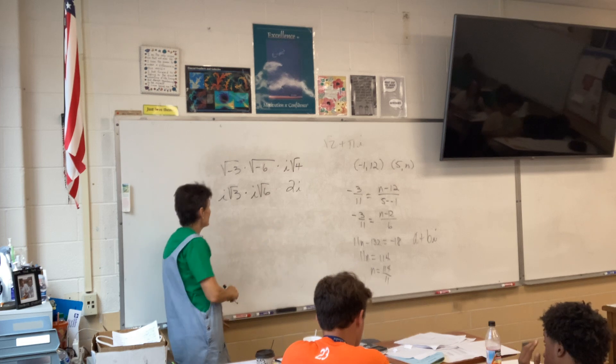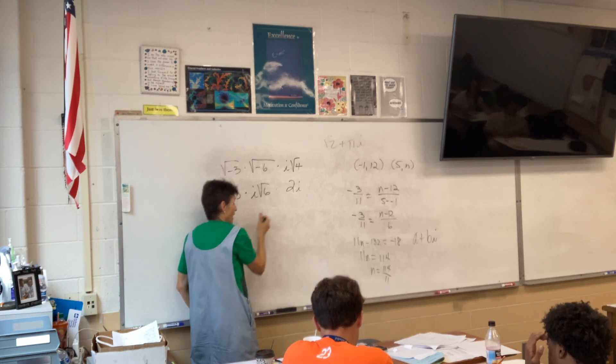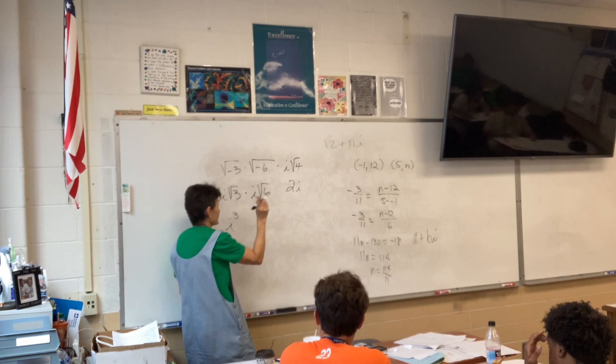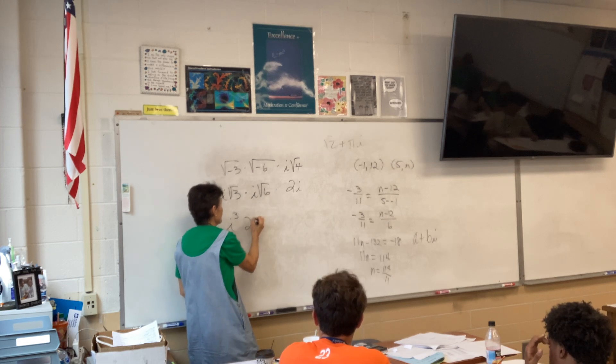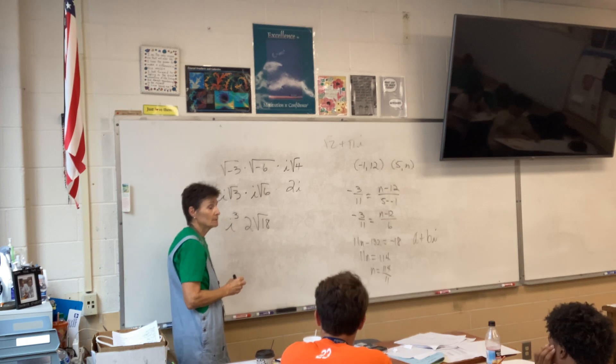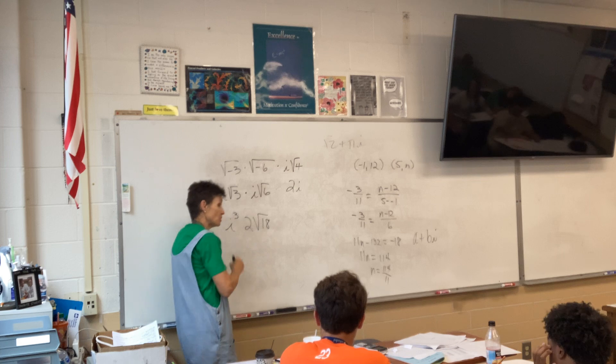Now, it's a multiplication problem. So, I have i times i times i, which is i cubed. Which is? Yeah, I'm going to get there in a minute. And then I have 2 root 18. Right? Yes. Now, i cubed, remember, is i squared times i.